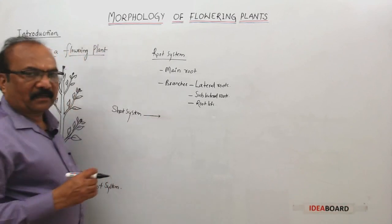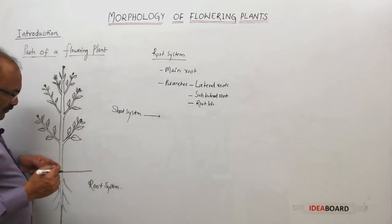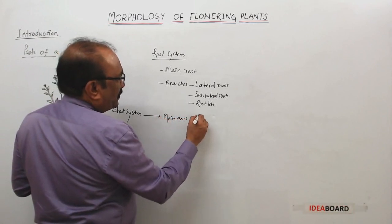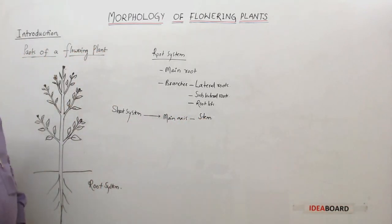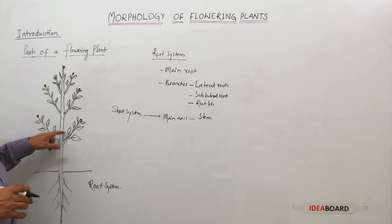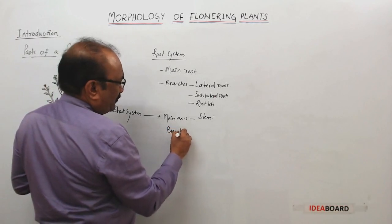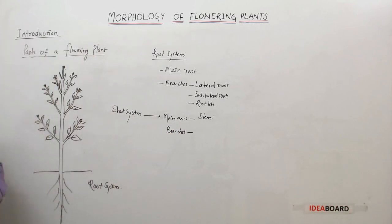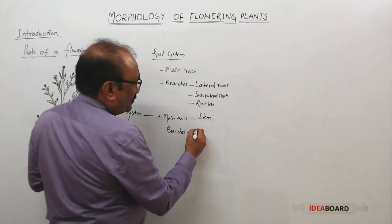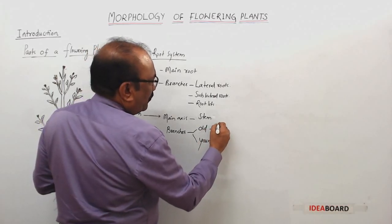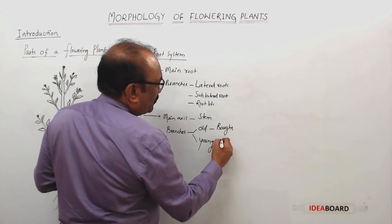In the shoot system, you will find different organs. You will find the main axis, which is called the stem. On this main axis or stem, you will find branches. When we examine a plant, these branches are of different types — some are old branches and some are young branches. The old branches are called boughs, and the young branches are called twigs.